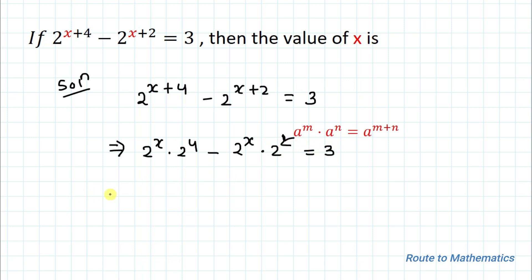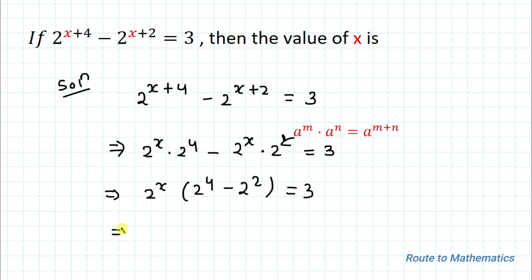In the next step we can take 2^x as a common factor: 2^x times (2^4 minus 2^2) equals 3.